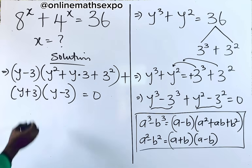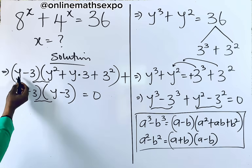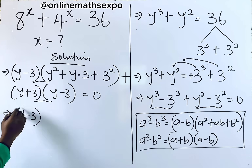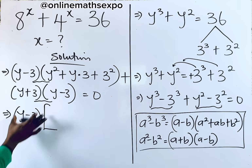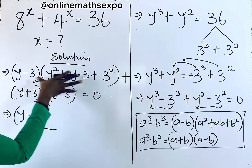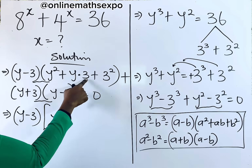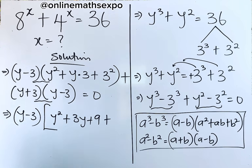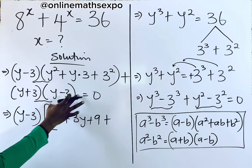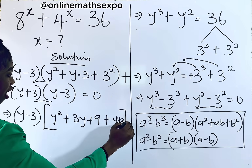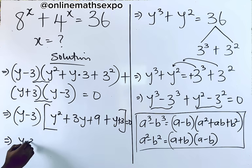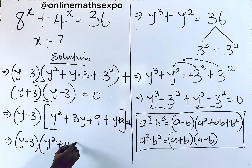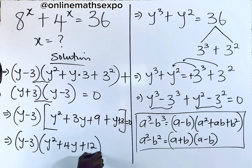Did you observe anything? You can see that (y − 3) is repeated in both parts. So we are going to factor it out. We have (y − 3) times: dividing the first group by (y − 3) leaves y² + 3y + 9, and dividing the second group leaves (y + 3). Combining like terms inside: 3y + y gives 4y, and 9 + 3 gives 12. So we have (y − 3)(y² + 4y + 12) equals zero.